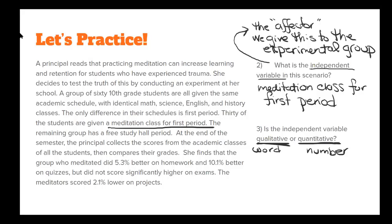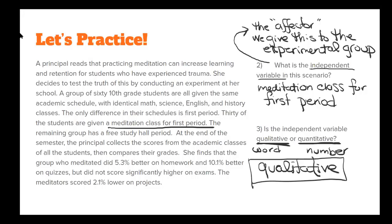This is qualitative. I wanted to say quantitative because of the 5.3% that it gives you, like a percentage. Oh, those are the scores though. So you're talking about a different variable. I'm talking about the independent variable, the meditation class. Now if we were talking about the dependent variable, then I might have a different answer.